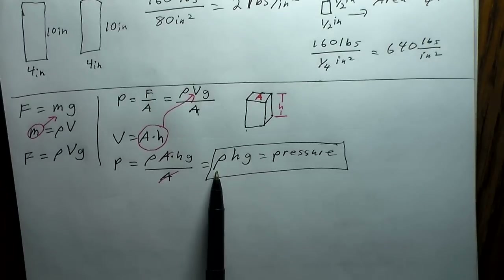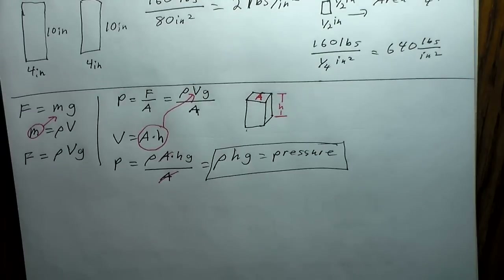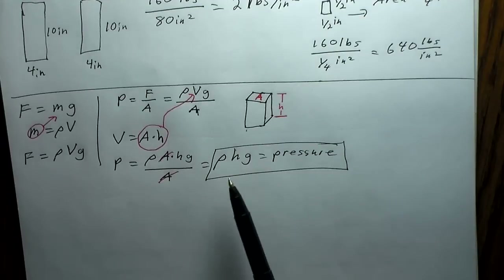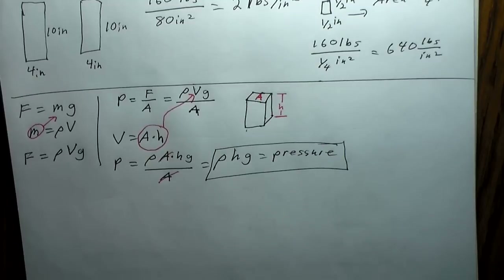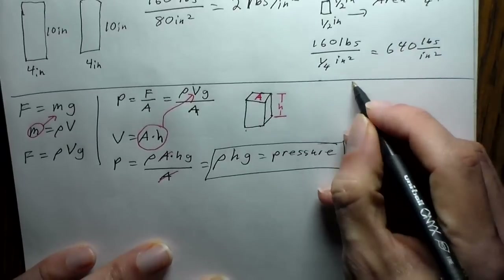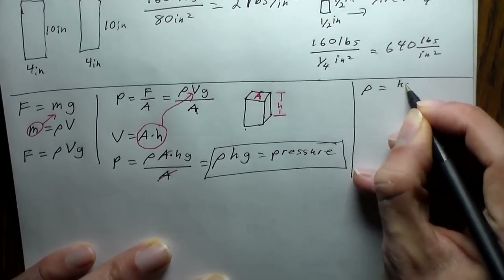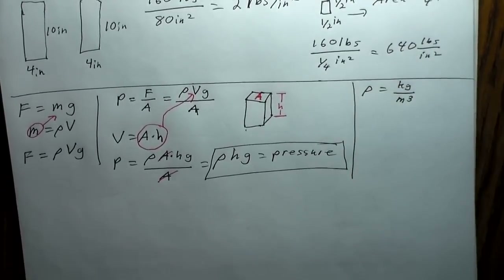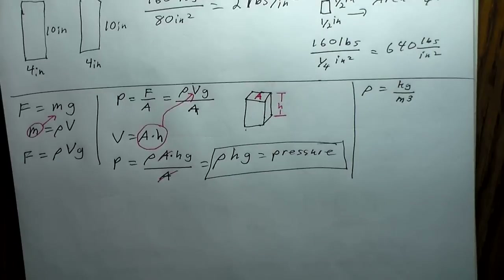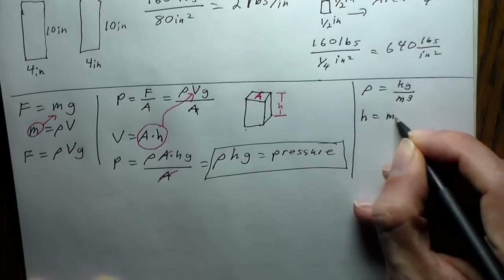We can use this equation to relate mercury and water barometers, and to predict pressure changes as you go up and down a hill. We have to be careful about units — if we use the wrong units, the result won't make sense. The density must be in kilograms per cubic meter.